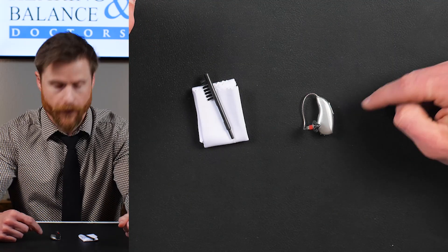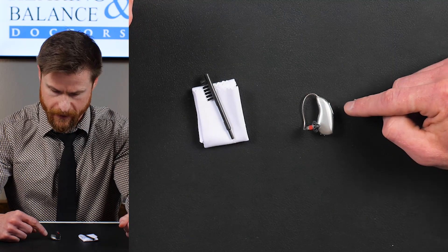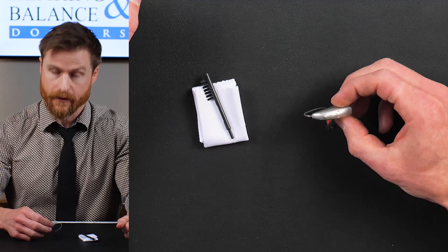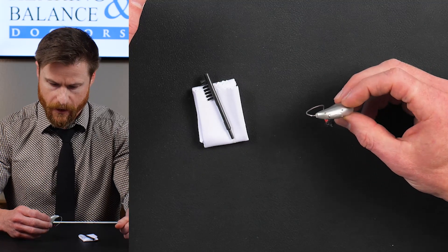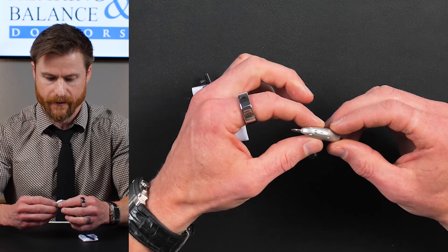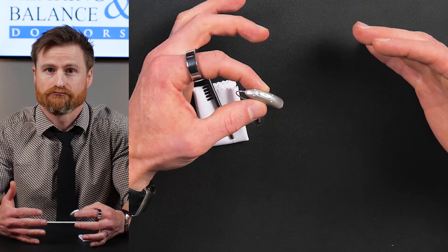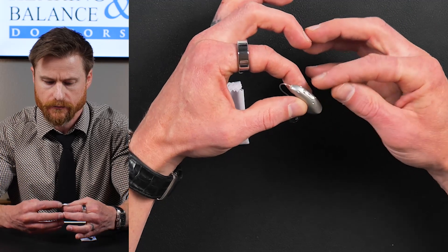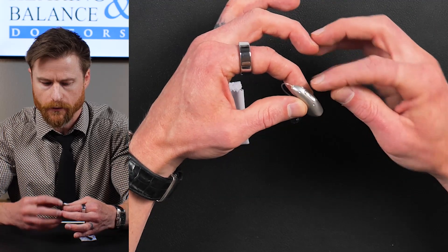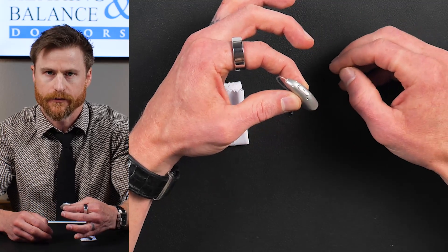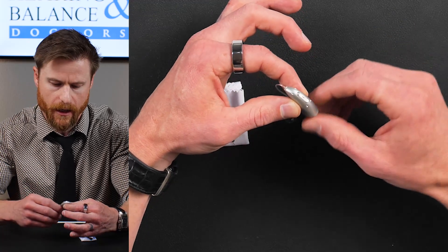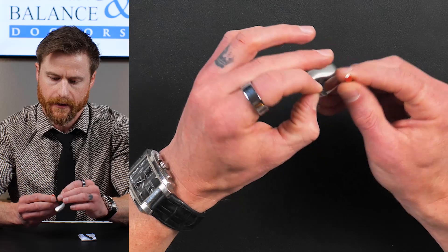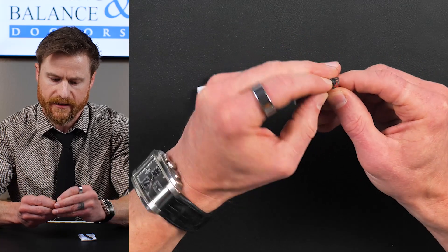Right now I have the Phonak Infineo Sphere device in front of me. This is one I wear often. It's an awesome hearing aid. I love it. So when you're cleaning the hearing aid, there's two main parts that you want to focus on. The microphones. See these like four holes here? Those are the microphone ports. And then the receiver right here, it's the speaker of the hearing aid. So how do you clean this stuff?